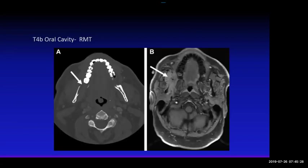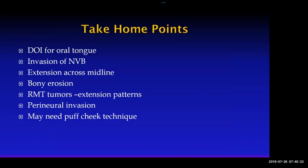Take-home points for oral cavity cancer: Remember to start using depth of invasion for oral tongue cancers — it's an important prognostic finding. Always look for invasion of the neurovascular bundle or extension across the midline lingual septum, as these impact surgery. Look for adjacent bony erosions. Look for extension patterns of retromolar trigone tumors — going into bone or the parotid gland. Always look for perineural invasion, because this is one area where we add real value, as the surgeon will never see it. If you have the history, use maneuvers like the puff cheek technique for oral cavity cancers.